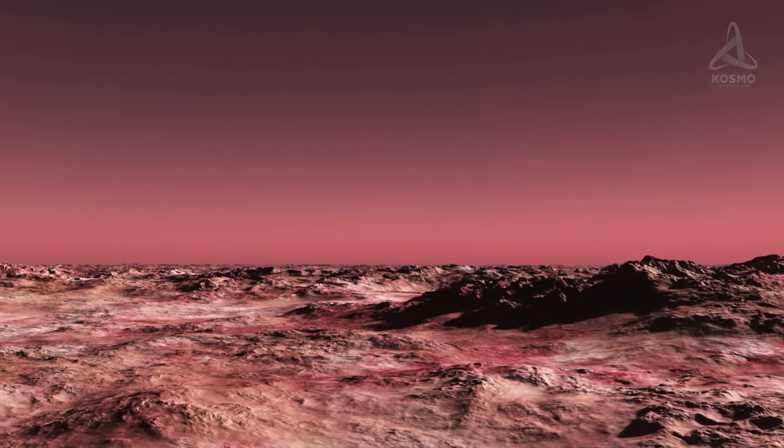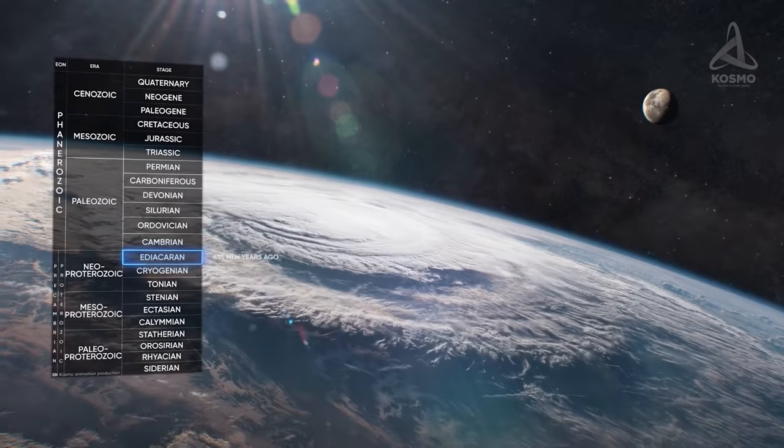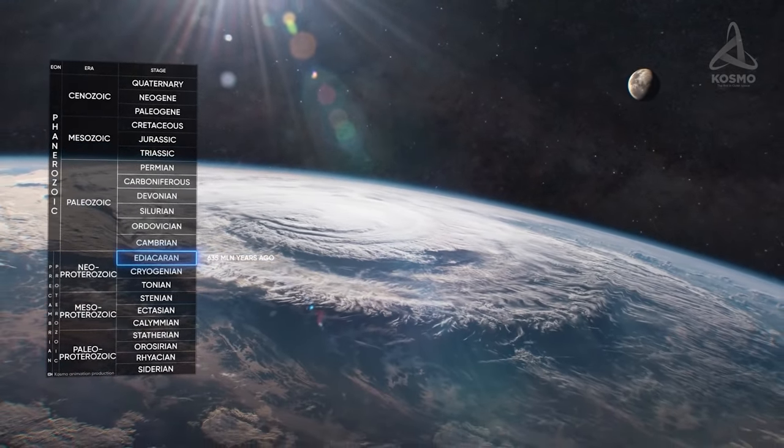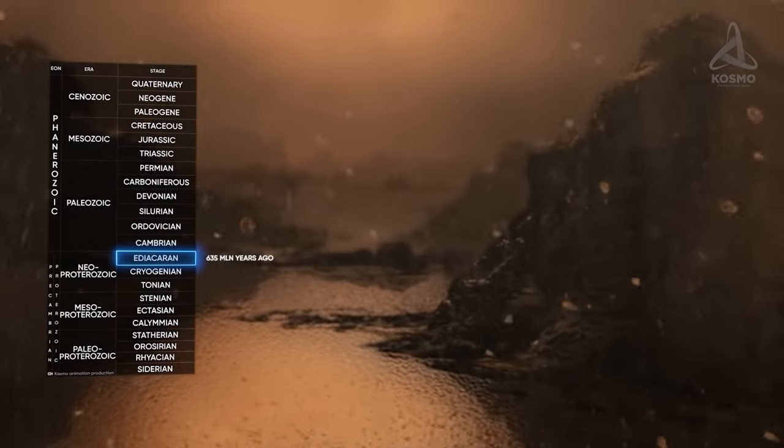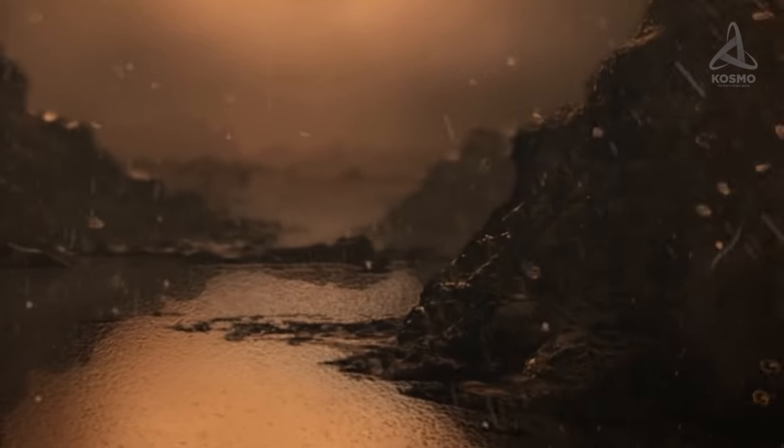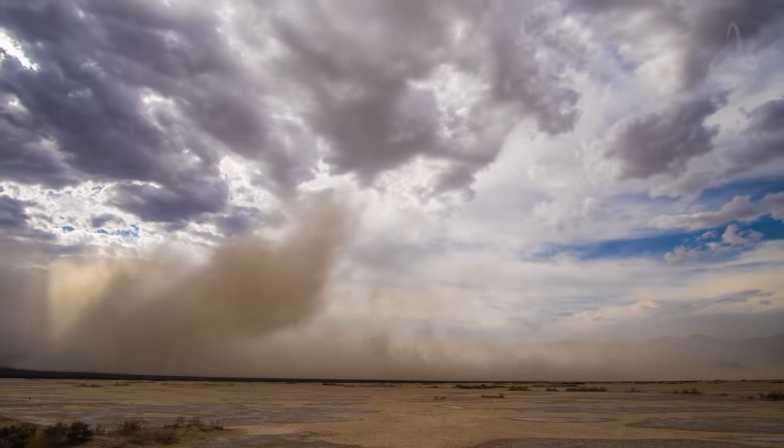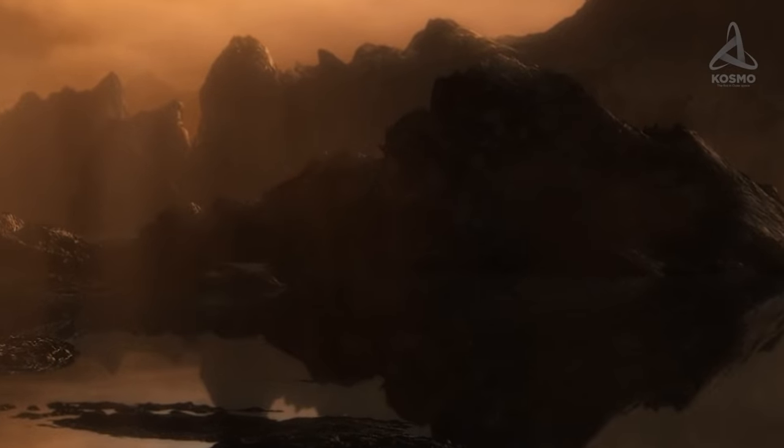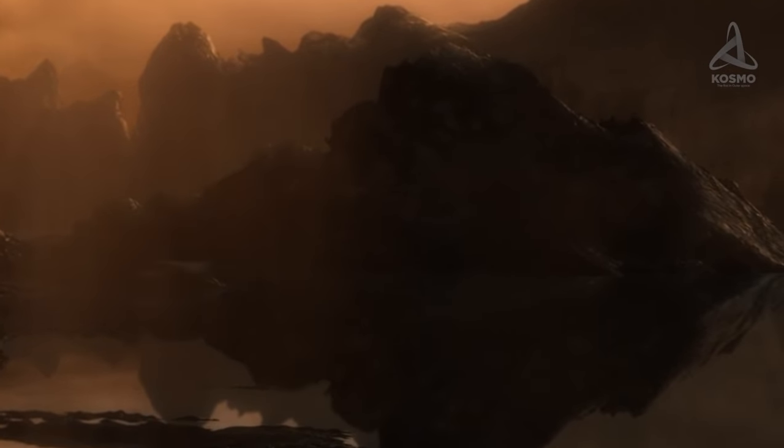Ediacaran, the last period in the Proterozoic, started approximately 635 million years ago, and persisted for 94 million years. The Earth of the time was far from being the most hospitable place. If today's human were to experience the environment of that period, he or she would very soon pass out due to asphyxiation, as oxygen concentration in the air was twice as low back then as it is now.